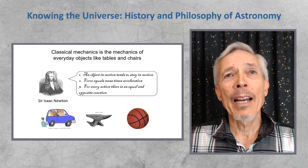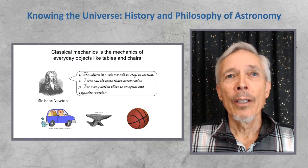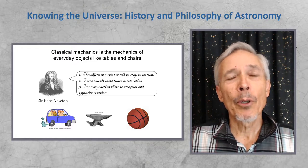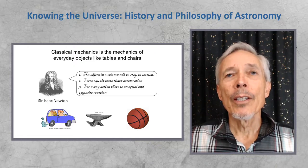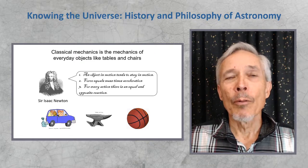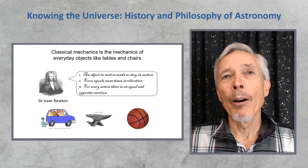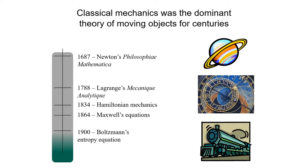Classical mechanics is the mechanics of everyday objects like tables and chairs. And they were and still are governed perfectly well by the laws of Isaac Newton, his three laws of motion which you see here. They still work completely well for everyday life. Classical mechanics was the dominant theory of moving objects for centuries, from the time of Newton's Principia, his gravity theory, through Lagrange's books on mechanics, Hamilton's book on mechanics, and Maxwell's equations of electromagnetic theory in the mid-nineteenth century. This is how physics worked for hundreds of years.